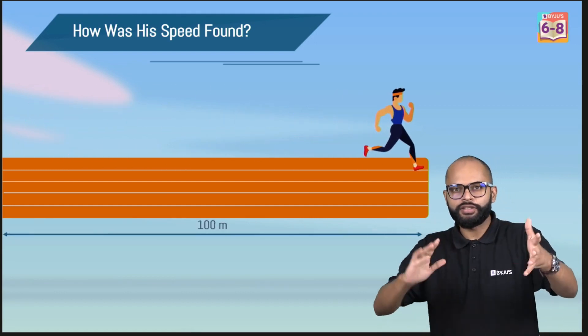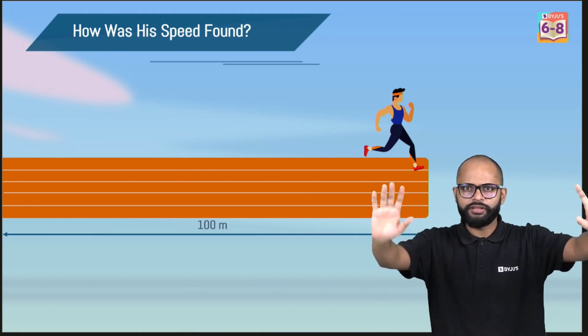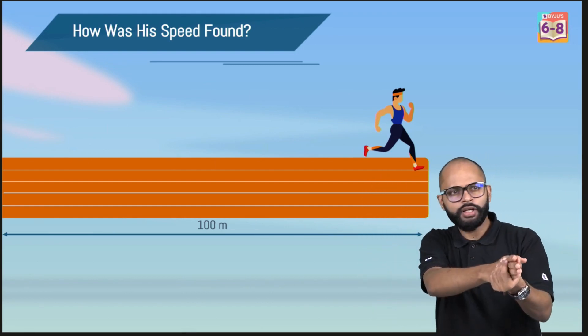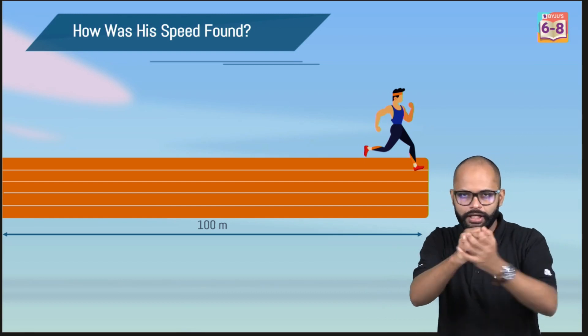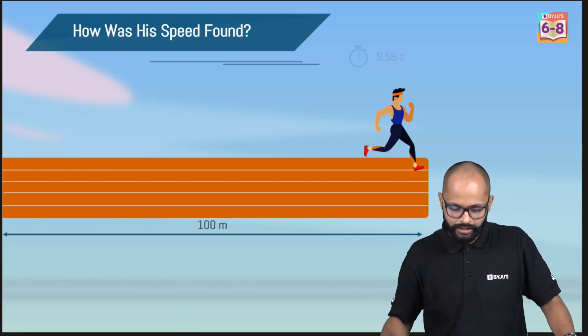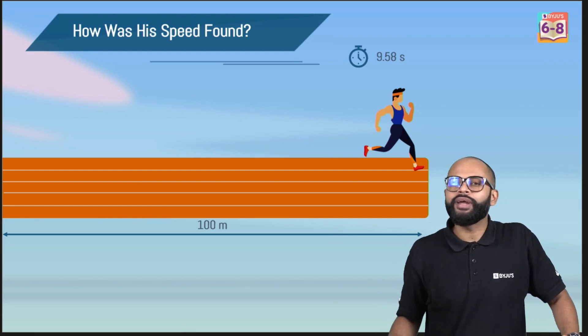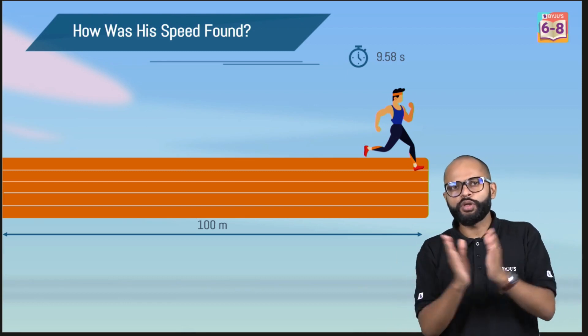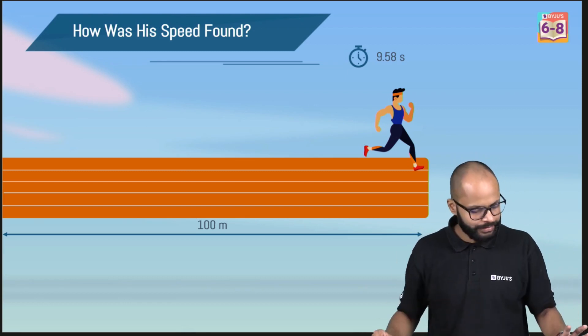And the moment an athlete crosses the finish ribbon, you might have seen them running and crossing the finishing ribbon, the moment a person touches the ribbon, you stop the clock. So whatever time you notice, you will get 9.58. This was the time recorded for Usain Bolt. So for 100 meters, you recorded time of 9.58 seconds.